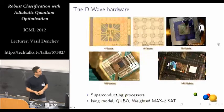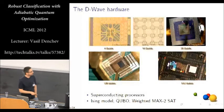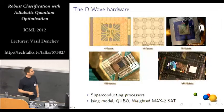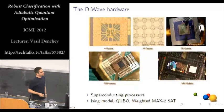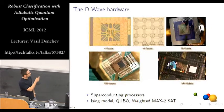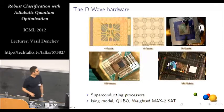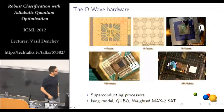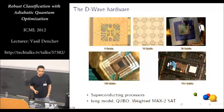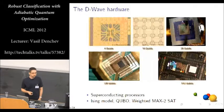All right, so here are some images of the D-Wave processor. So they're built on a superconducting technology. There have been several generations completed already, from all the way from four to 512 qubits. And that means the latest generation means that we can solve problems with 512 binary variables.